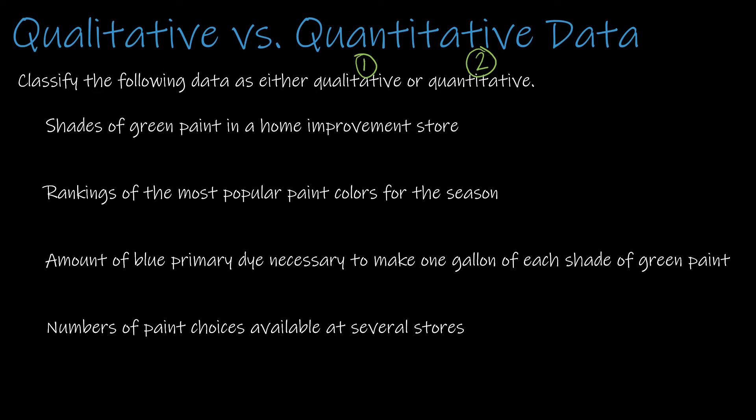I'm going to use the same numbering system from my last question to make things go a bit faster. The first question has to do with shades of green paint in a home improvement store — not really anything to do with numbers here. Even if each shade might be denoted by some number for categorizing, it is still a category, so that is a qualitative variable. Rankings of the most popular paint colors for the season — rankings do indicate a number, but we would not find value in finding the average ranking, so this is still qualitative.